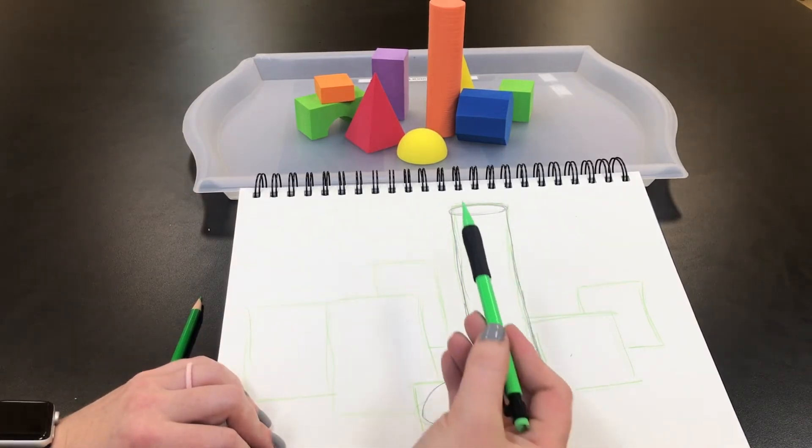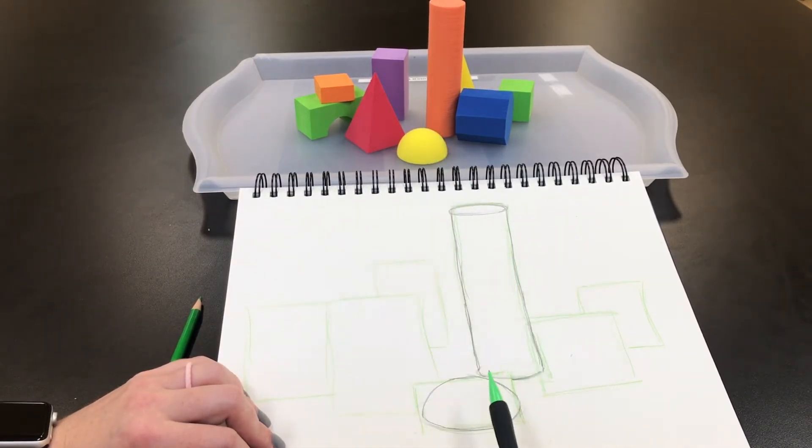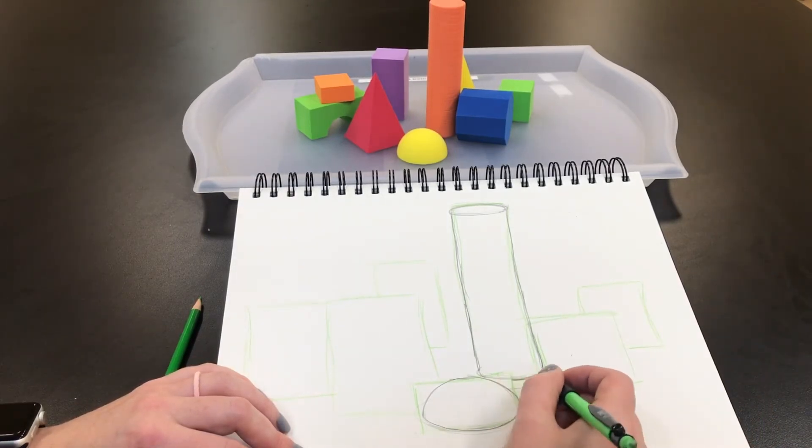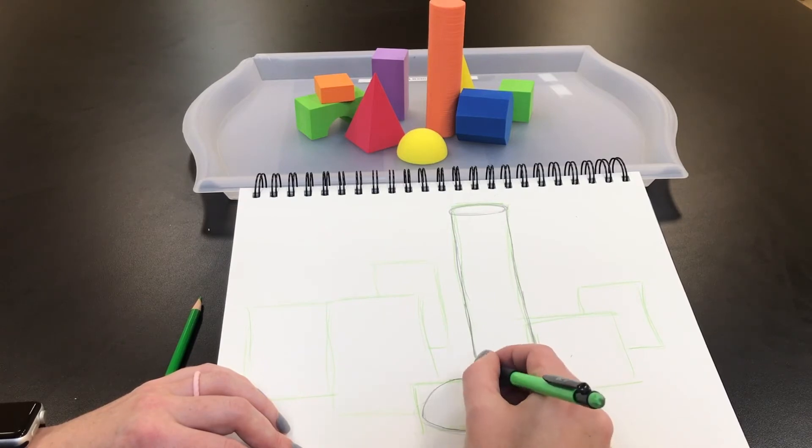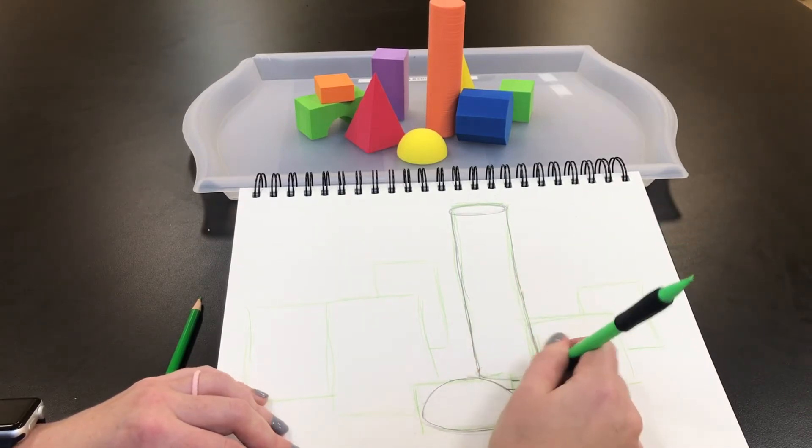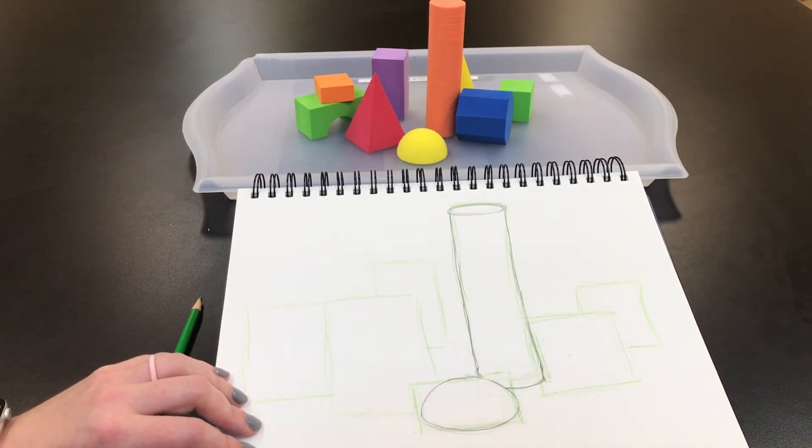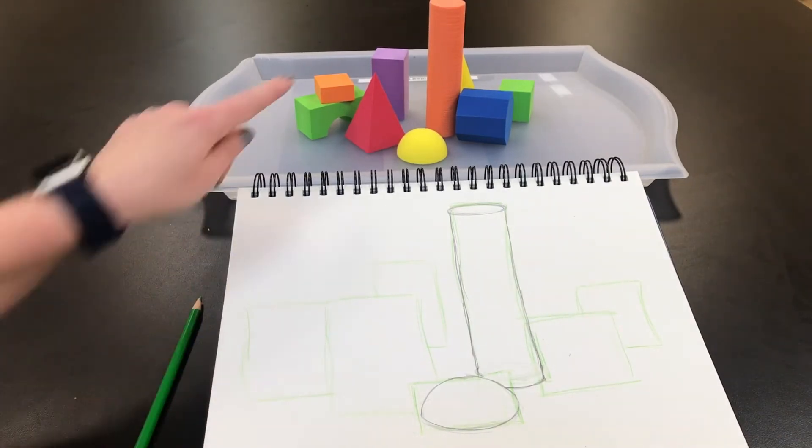And I'm going to erase that work on the inside so you don't see it anymore. Now notice, my orange and yellow shape should be touching. Mine aren't. So I'm going to bring my guy down just a little bit more. Again, we want to be paying attention to overlap. That's better. Great.